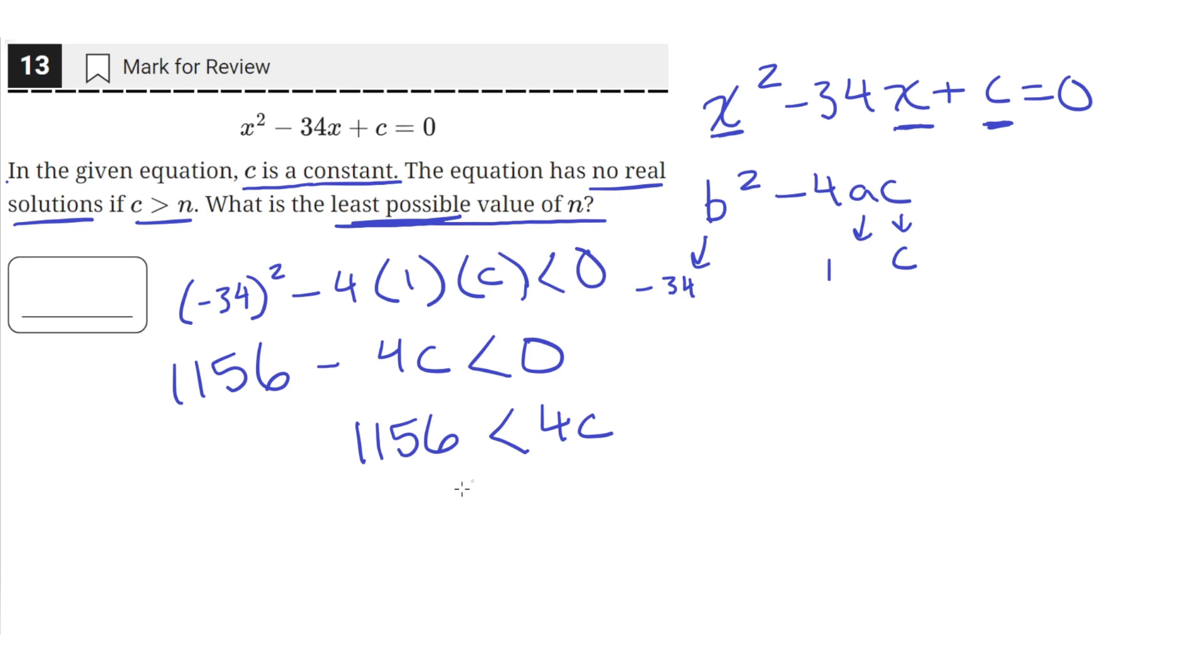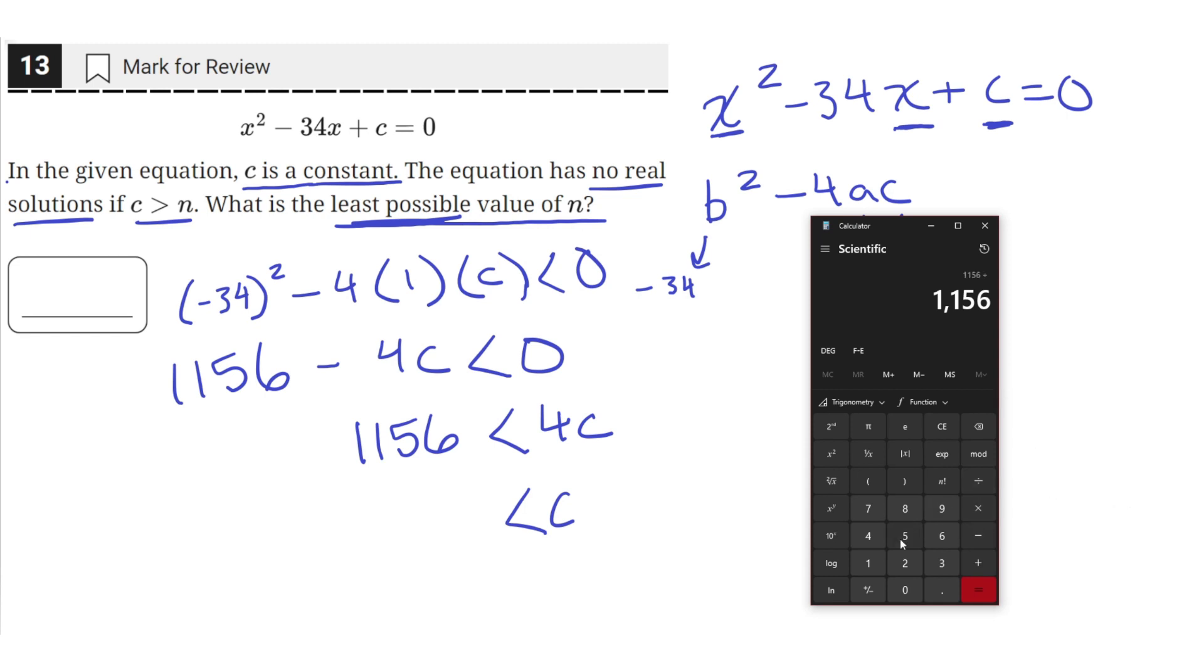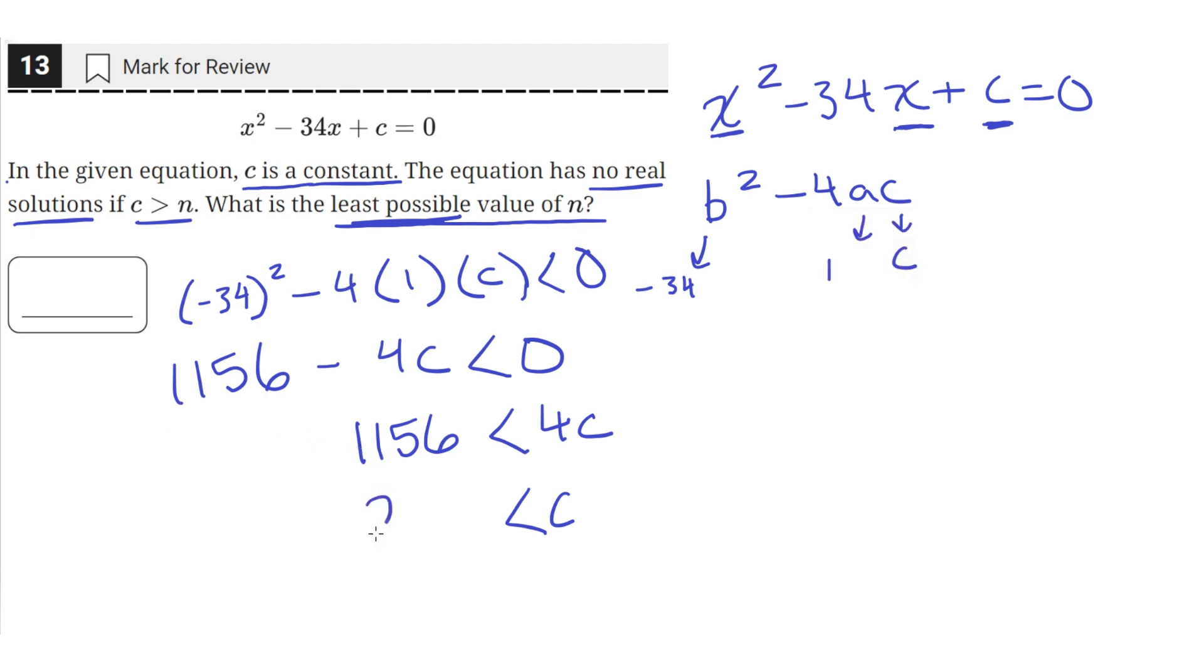Then let's divide both sides by 4 to get c alone. So 1,156 divided by 4 is equal to 289.